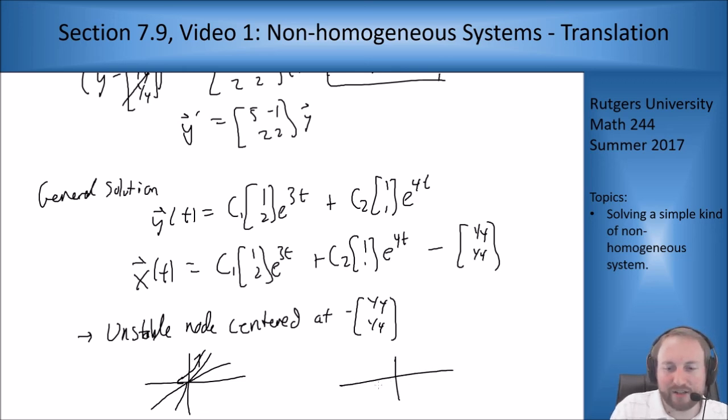Now instead they're just centered off here and my curves do the same sorts of things in this area. It's just now off-centered. It's an unstable node but it's shifted. So the whole point is that if I just have a translation I can undo the translation and just get a shifted phase portrait where instead of having it centered at zero it's centered somewhere else. That's it for this video, just a simple example of a non-homogeneous system we can solve fairly easily just by doing a translation. Thanks for watching and I will see you in the next one.